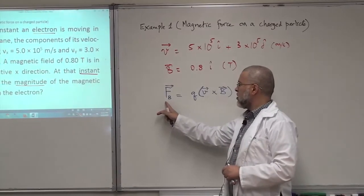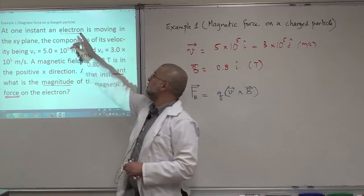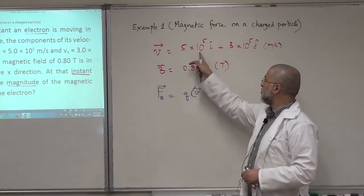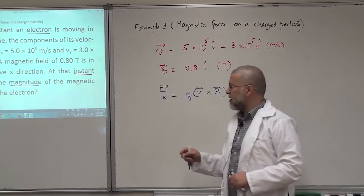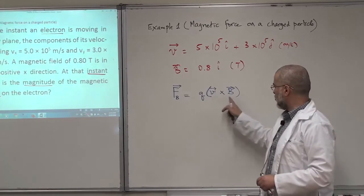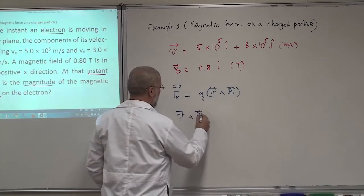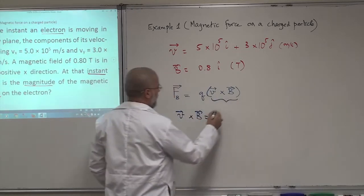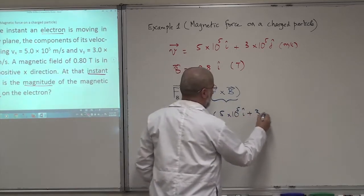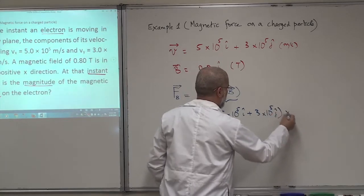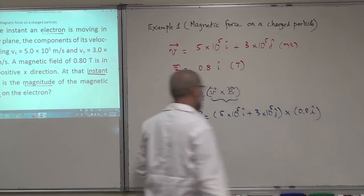You notice that to have a force on a charged particle — and our charged particle is Q here — it's an electron, so I know the charge of the electron. V is given to you here and B is given to you, and I want the magnitude of the force. Let's calculate the force as a vector. I'm going to do V cross B only: V is 5×10⁵ î plus 3×10⁵ ĵ, cross B which is 0.8 î. So we do the cross product.